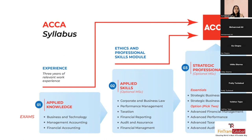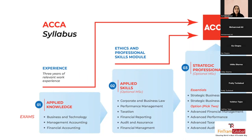Then you have the Applied Skills level, which includes Law, Performance Management, Taxation, Financial Reporting, Audit & Assurance, and Financial Management. At any particular level you can give exams in any order — maybe taxation first, then performance management. At the Strategic Professional level, there are two compulsory essentials: Strategic Business Leader and Strategic Business Reporting. After that you pick any two from four optional papers.